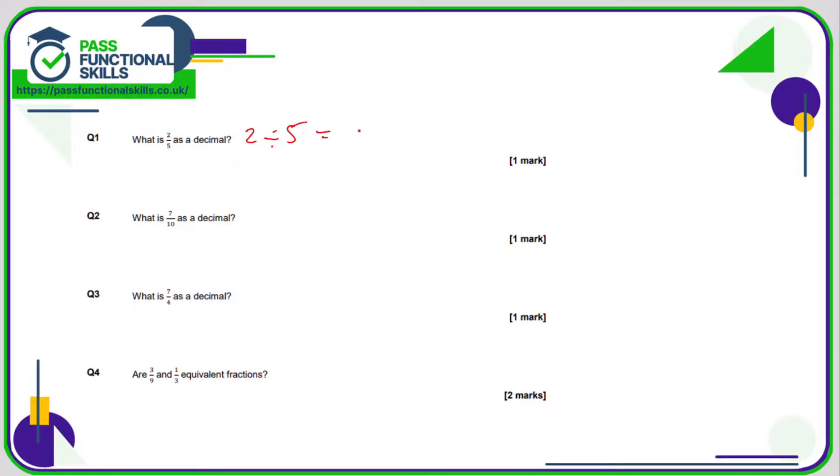So two divided by five is 0.4, seven divided by ten is 0.7, seven divided by four is 1.75.